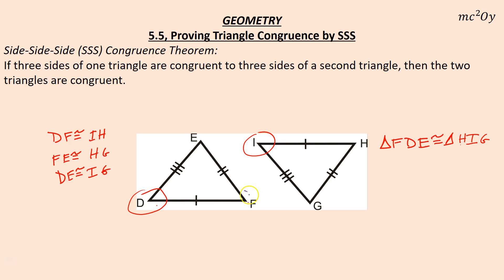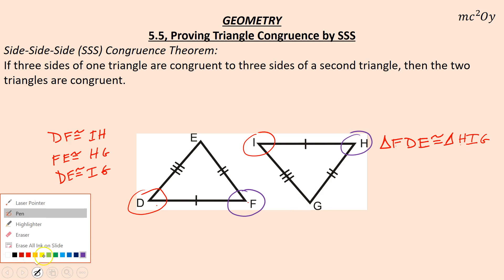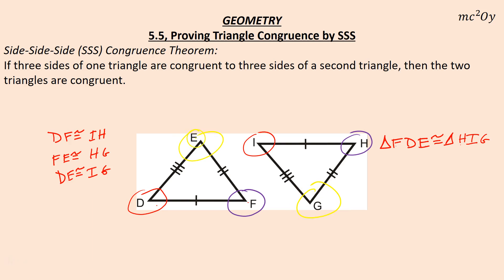Angle F corresponds to angle H — they're in the same position. Angle G corresponds to angle E, so angle G and angle E are in the same position, just like angle H and angle F, and angle D and angle I. They correspond. So if you have three sides of one triangle congruent to three sides of another triangle, you have the two triangles congruent by side-side-side.